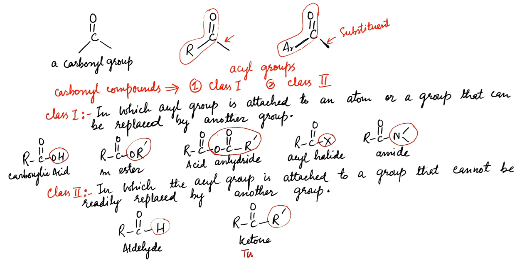Thus a ketone has two alkyl or aryl groups attached to a carbonyl group. An aldehyde has at least one hydrogen and an alkyl or aryl group attached to carbonyl group. Formaldehyde is the simplest aldehyde which has two hydrogens attached to carbonyl group.